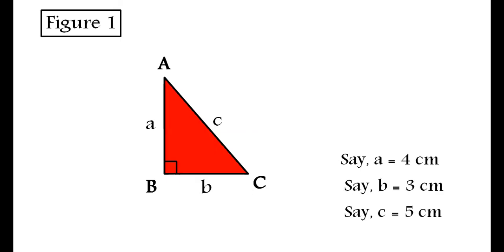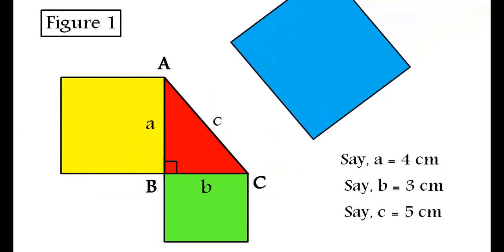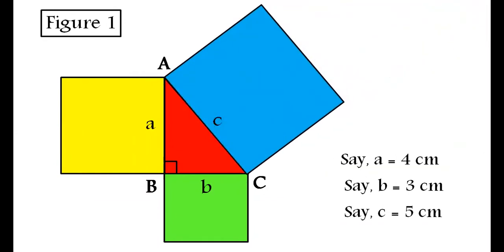Now, paste yellow square on AB with side a units. Then paste green square on BC of side b units. Next, place blue square of c units on hypotenuse AC.